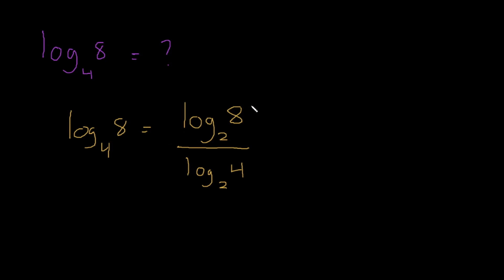2 raised to what would give me 8? I know that 2 raised to 3 would give me 8, and so our numerator would be 3. And now 2 raised to what would give me 4? That's simply 2 squared, right? So this would give me 3 over 2, and that is our answer.